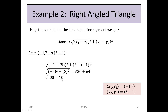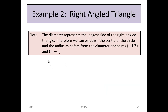The length of 10, from (-1, 7) to (5, -1), is the longest side, so it must represent the hypotenuse. The diameter represents the longest side of the right-angled triangle. Therefore, we can establish the centre and radius from the diameter endpoints (-1, 7) and (5, -1), exactly as we did in Example 1.